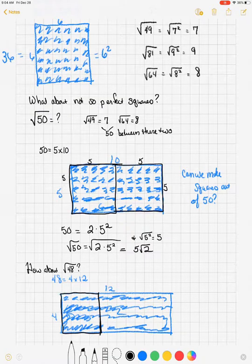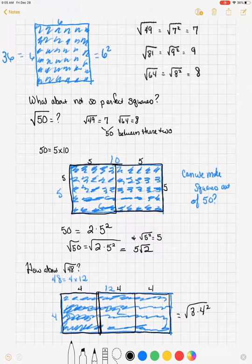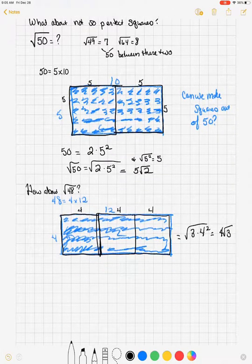Here's a 4 by 4, and another 4 by 4, and a third 4 by 4. So we have three of these four squared squares, and the 4 squared comes out as a 4. The 3 stays inside.